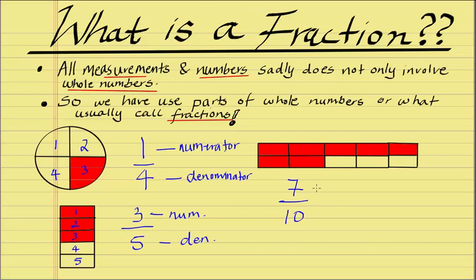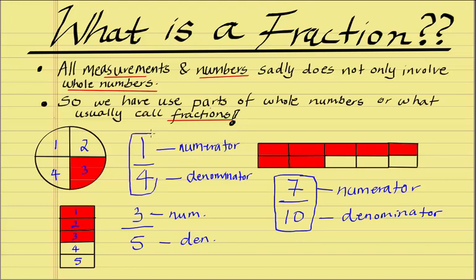Or seven out of ten. Remember, the top is called the numerator, while the bottom number is called the denominator. And that's our solution. This right here is our fraction, as it was here and as it was here.